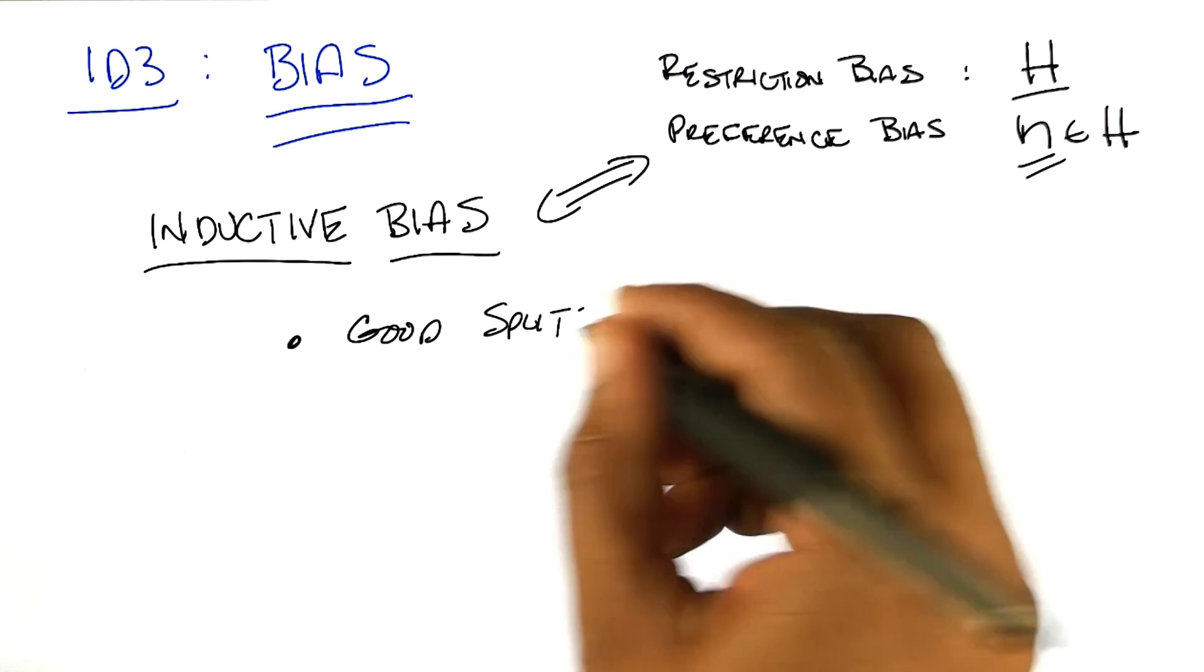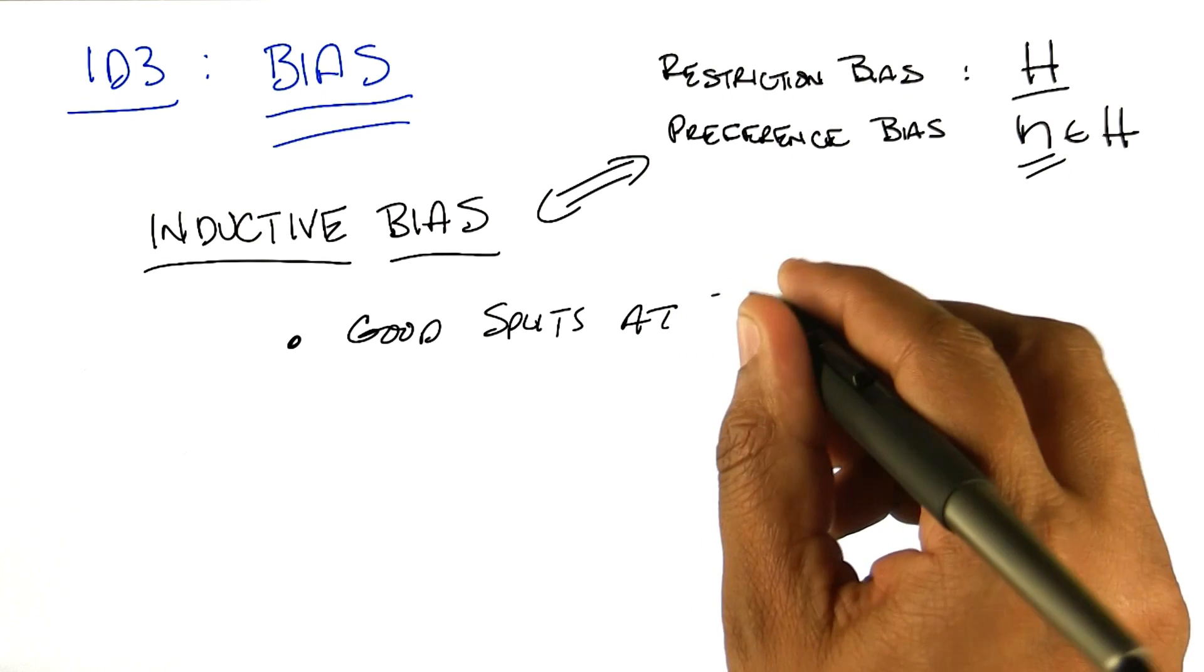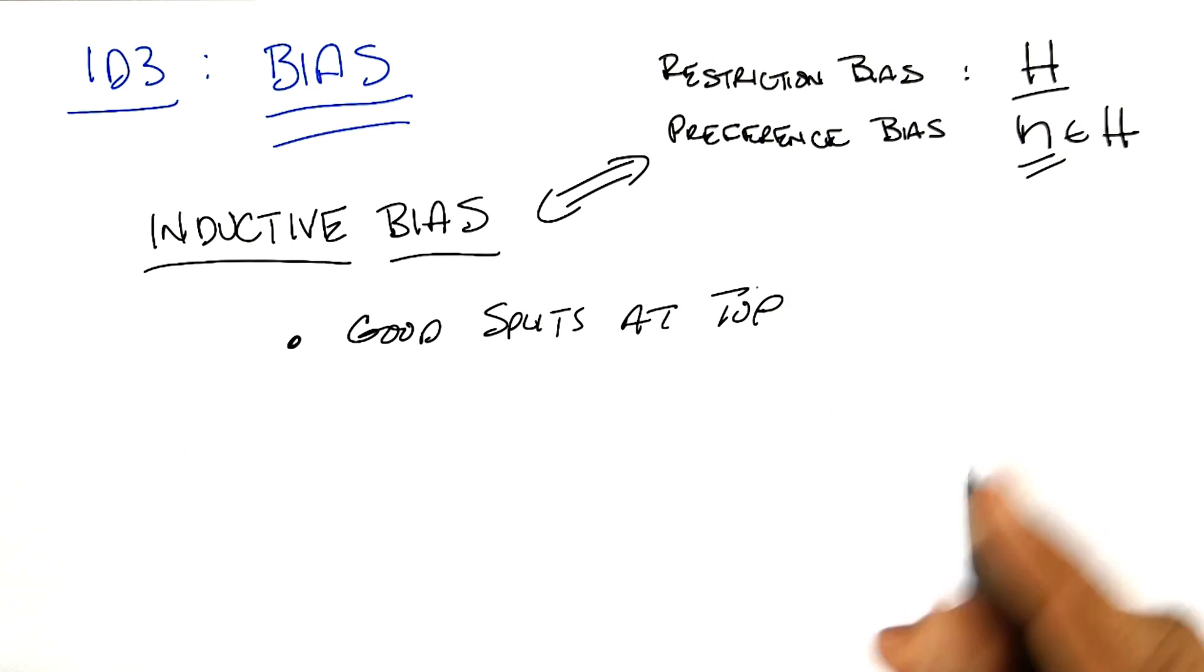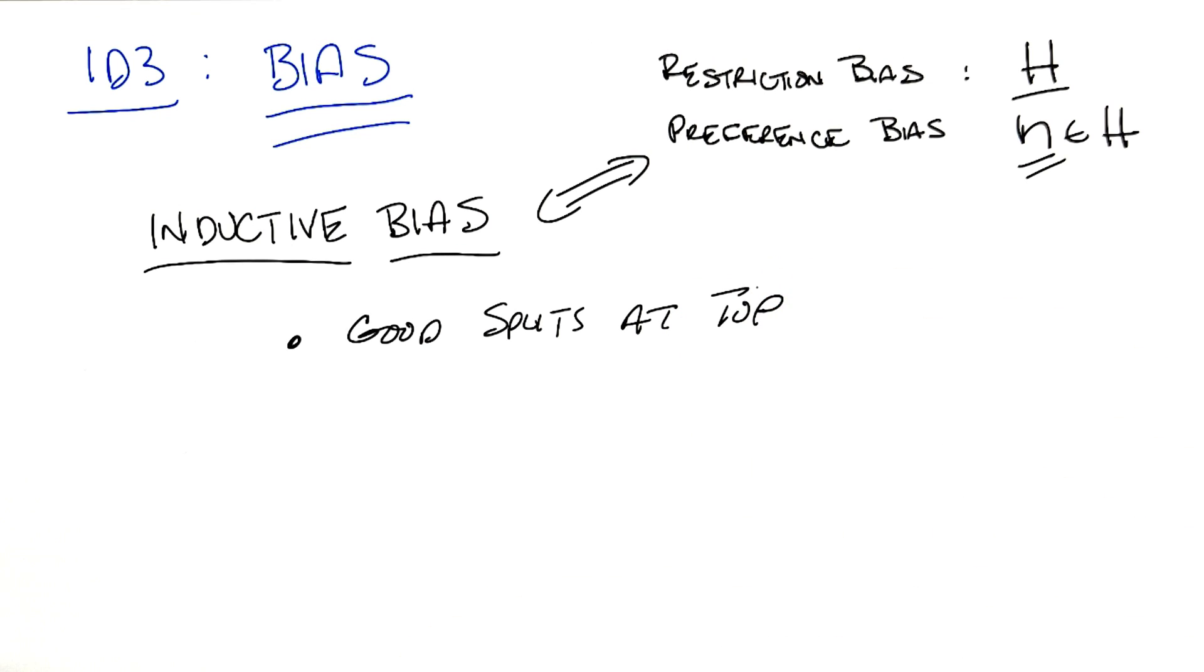So good splits near the top. Right? And you said something very important there, Michael. Given two decision trees that are both correct, they both represent the function that we might care about, it would prefer the one that had the better split near the top.